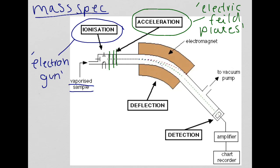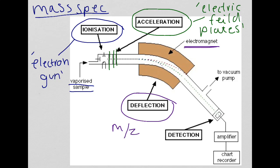The next part is deflection. This is because of the electromagnet. The path of the ions is altered by the magnetic field, and the lighter ions have less momentum, therefore they can be deflected more easily. This is all to do with the m/z ratio, which is the mass-to-charge ratio. If they're higher in mass, then it's harder to deflect them.